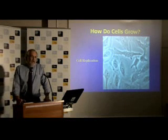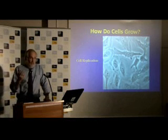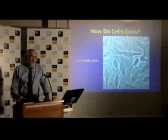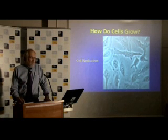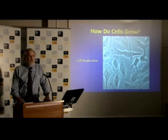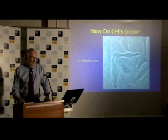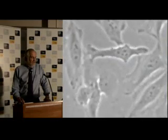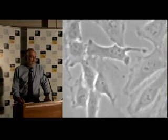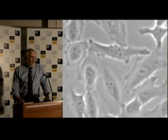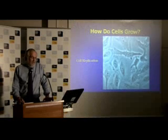Fundamental to the understanding of cancer, which is all about disordered cell growth, is an understanding of how cells grow. If you look at this animated sequence here, you will see cells and the nuclei of the cells. Before they divide, the first thing that happens is the nucleus divides. You'll see the cells round up, divide the nucleus, and then there are more cells.